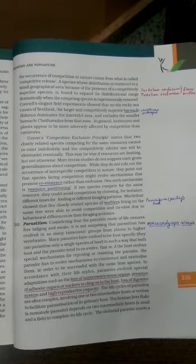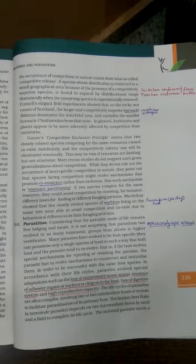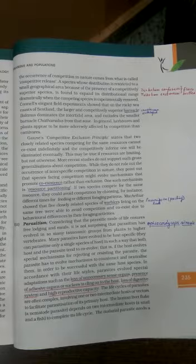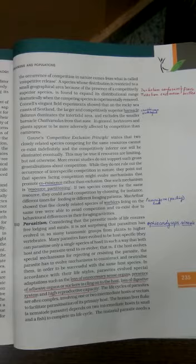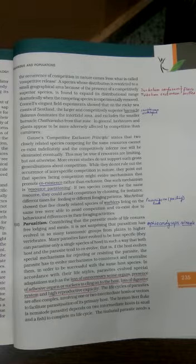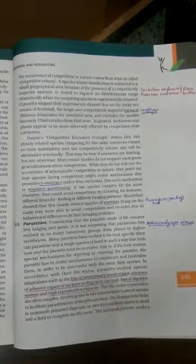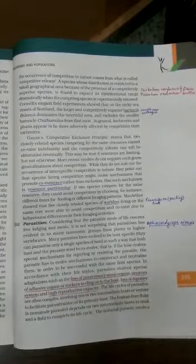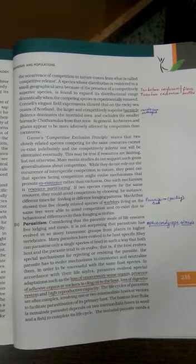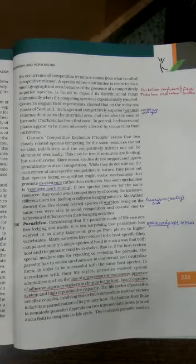We all know parasites want to continue this mechanism of free lodging and free meal. The host will try to develop features and characters so that it can somehow get rid of the parasite. Whenever the host tries to develop defenses against the parasite, the parasite evolves counter defenses so that it can easily parasitize even in the future. NCERT says that if the host evolves special mechanisms for rejecting or resisting the parasite, then the parasite has to evolve mechanisms to counteract and utilize the mechanisms developed by the host in order to be successful with the same host species.